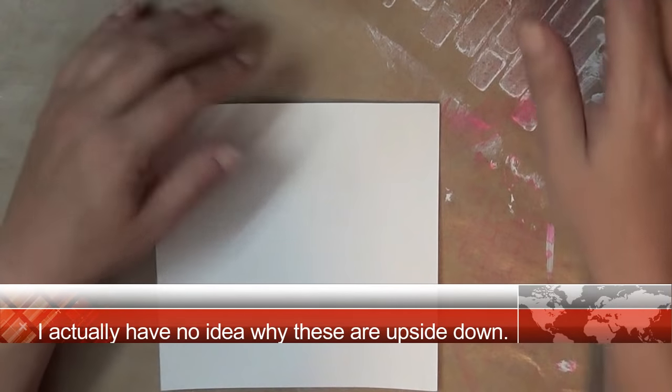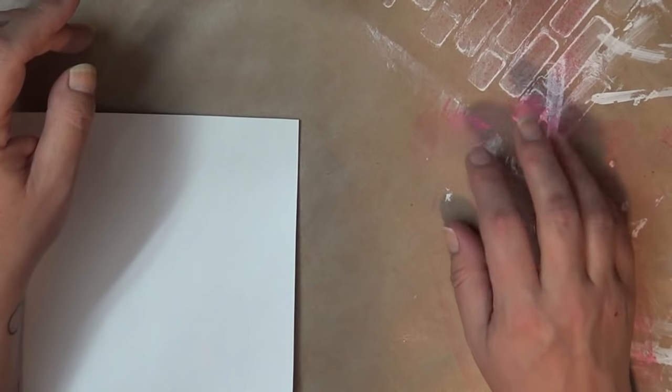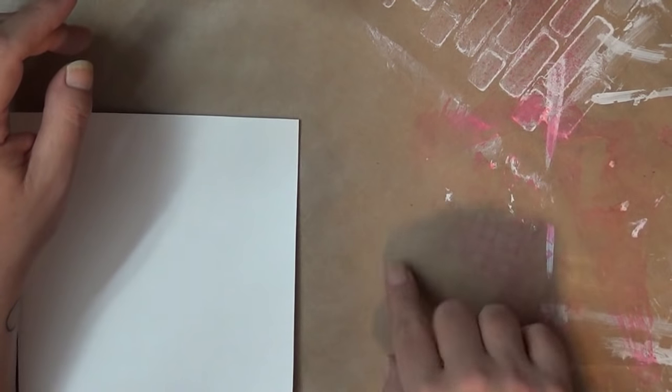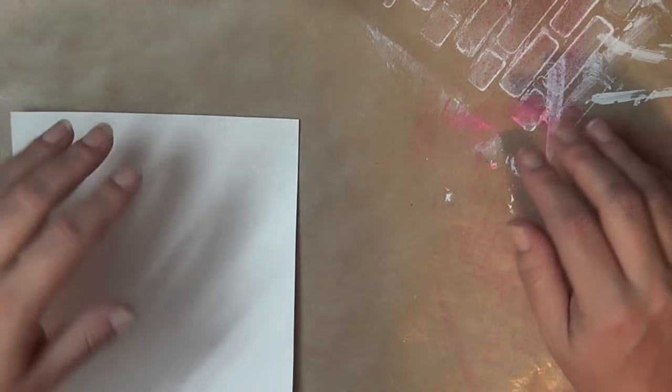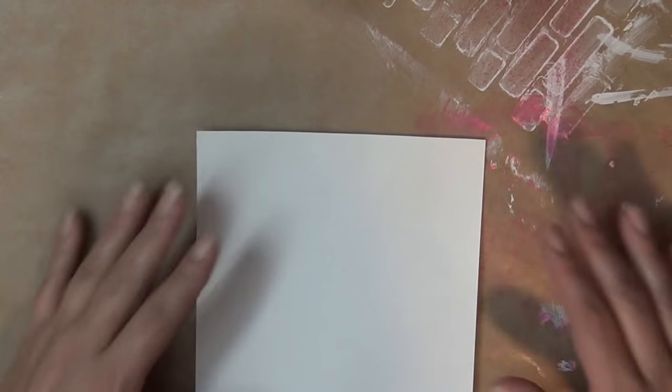So those are the three colors I'm going to use, and I got my spray bottle of water, and below me is just some meat market paper. This is the waxy side, so that's what I'm going to use as my palette, and I've got my brushes over here, so I'm ready to go.